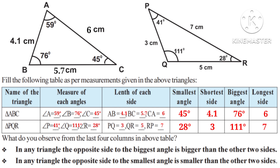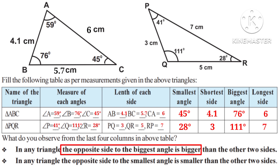From the last four columns in the above table, we can conclude that in any triangle, the opposite side to the bigger angle is bigger than the other two sides.